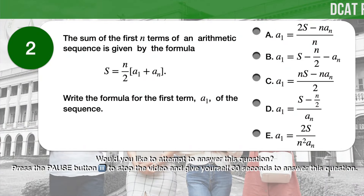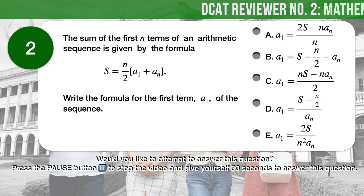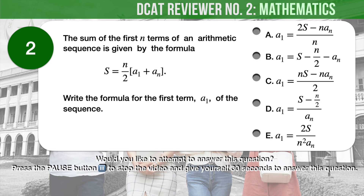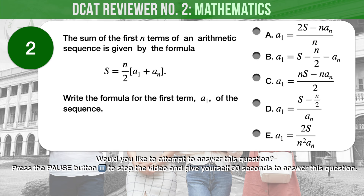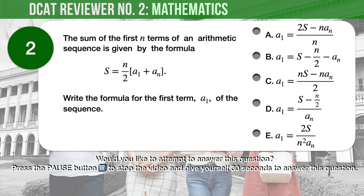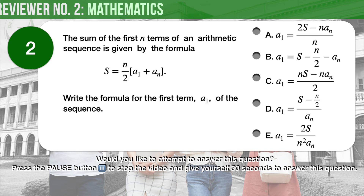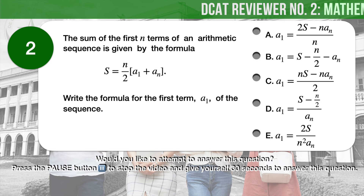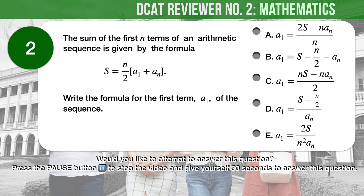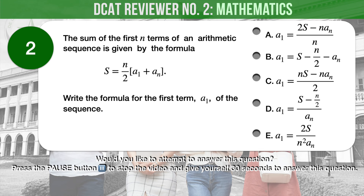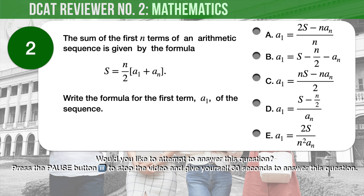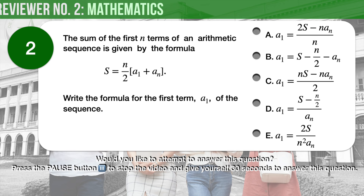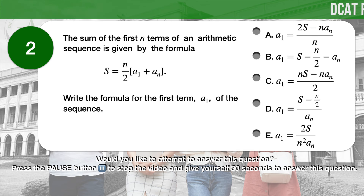Question number 2. The sum of the first n terms of an arithmetic sequence is given by the formula: S equals n over 2 times the quantity A1 plus An. Write the formula for the first term, A1, of the sequence. A. A1 equals the quantity 2S minus n times An, all over n. B. A1 equals S minus n over 2, minus An. C. A1 equals the quantity n times S minus n times An, all over 2. D. A1 equals the quantity S minus n over 2, all over An. E. A1 equals 2S over n squared times An.